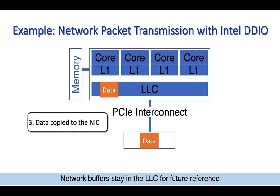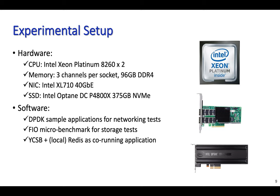In the following slides, we are going to go through some experimental results collected from real hardware to understand the effectiveness of DDIO. For our experiments on real hardware, we use servers equipped with dual-socket Intel Xeon Platinum processors, where each socket has three DDR4 memory channels. For network experiments, we connect two of these servers using 40 GB Ethernet NICs. For SSD experiments, we use Intel Optane SSDs. We run DPDK example applications for networking tests and run FIO, YCSB, and Redis for SSD-related experiments.